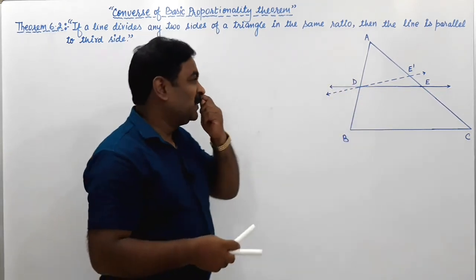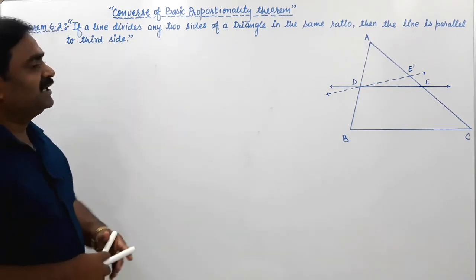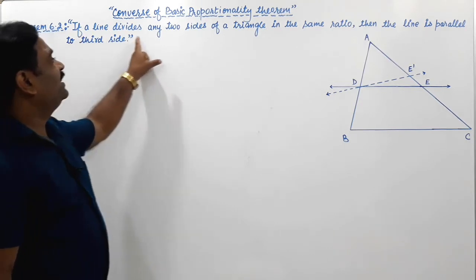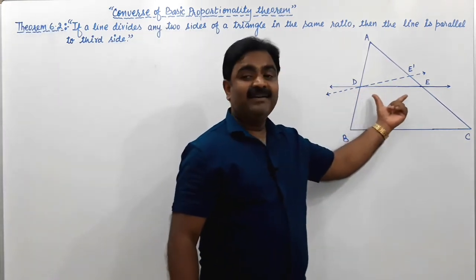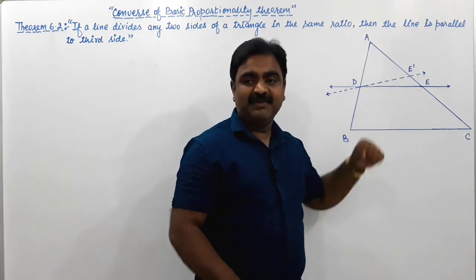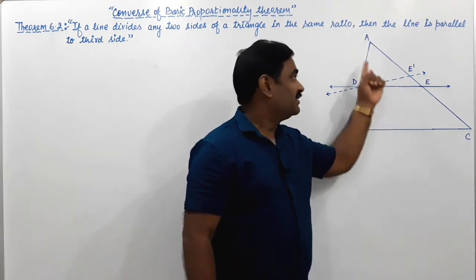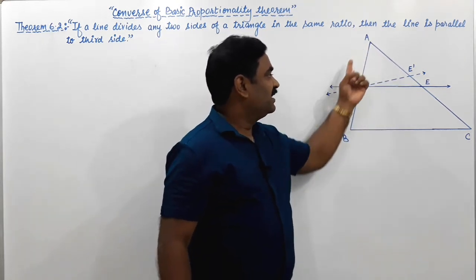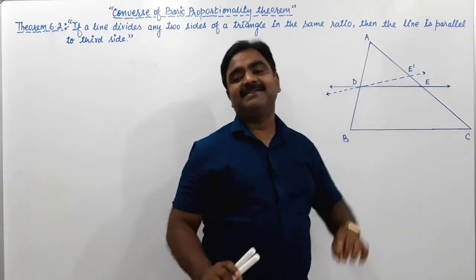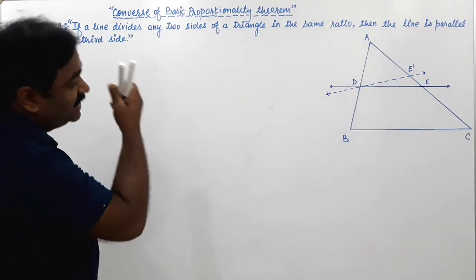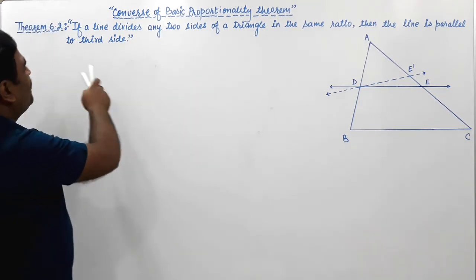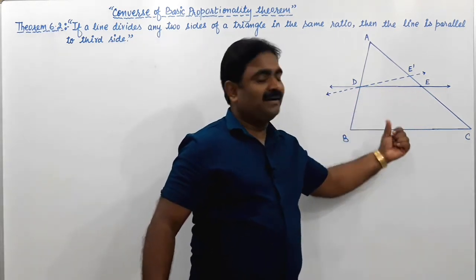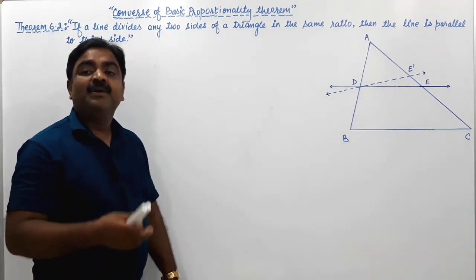Now here, the Converse of Basic Proportionality Theorem is just the opposite of 6.1. If a line divides any two sides — this line is not parallel to one side — but this line divides these two sides in such a way that their ratios are the same, meaning AD upon DB equals AE upon EC, this is given. Then the line is parallel to the third side. So let us prove this theorem.